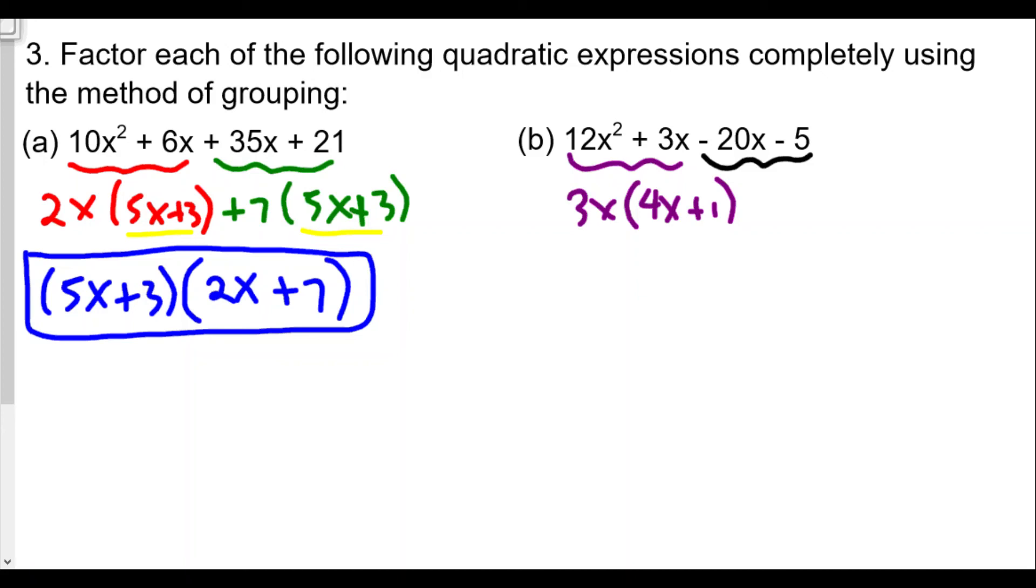So instead, our GCF will be -5. If we divide each of those terms by -5, one of the things you might want to notice is that both terms are negative. You might want to factor out the negative as well, because -20x divided by -5 is 4x, and -5 divided by -5 is plus 1.